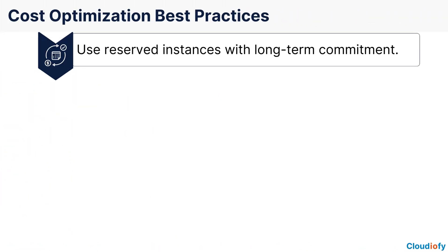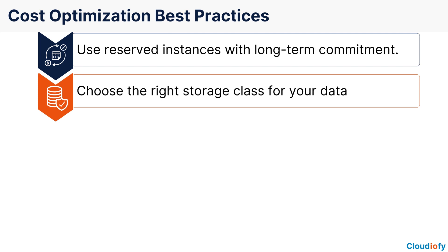Use reserved instances for stable workloads. By committing to a longer-term contract, you can reduce your costs significantly compared to on-demand instances. Choose the right storage class for your data — AWS offers various storage classes with different pricing tiers and performance characteristics, so by choosing the most appropriate one, you can optimize your costs while still meeting your data storage needs.